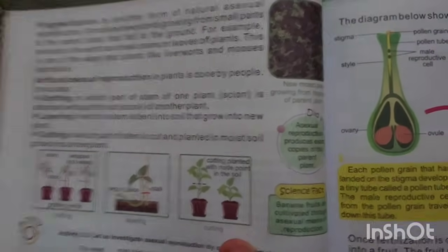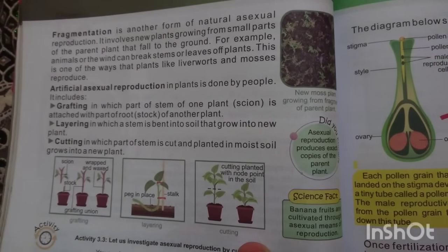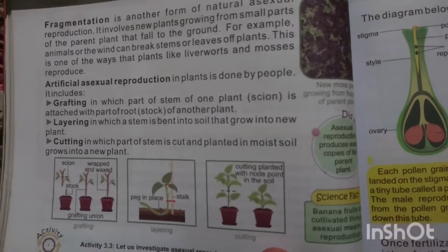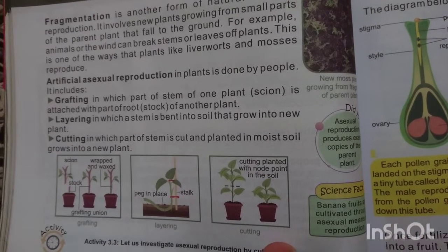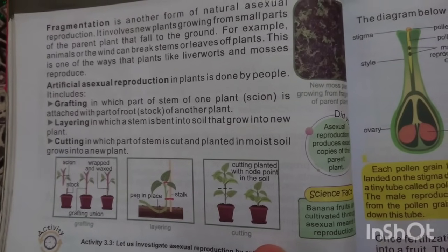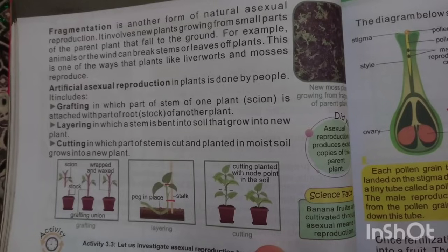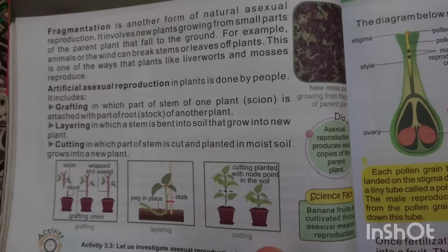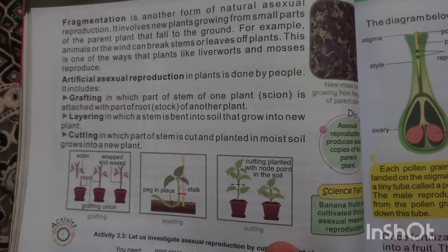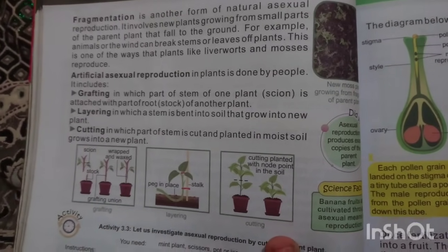Artificial asexual reproduction in plants is done by people. It includes grafting, layering, and cutting. Grafting is when part of a stem of one plant is attached to part of another plant. Layering is when a stem is bent into soil and grows into a new plant. Cutting is when part of a stem is cut and planted in moist soil, where it grows into a new plant.